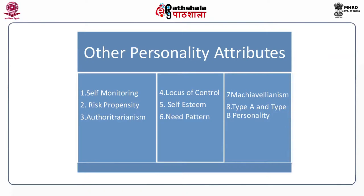Number four is locus of control. In a business organization, there are many events happening altogether. The mindset and belief of an individual regarding whether these events are under control or out of control represents the locus of control. Two kinds of personalities emerge: externals and internals. Externals think that events are beyond their control as these are directed by external forces; they are not completely satisfied with their job and their tendency to remain absent from work is higher. Internals, on the other hand, are more disciplined and controlled as they believe events can be controlled by putting in extra effort.